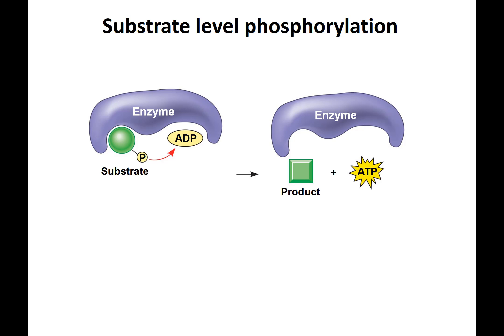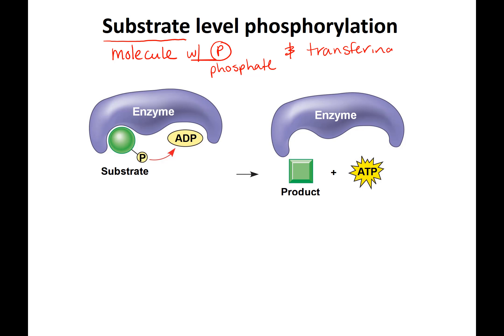Substrate-level phosphorylation means taking the phosphate from a substrate molecule and transferring it to ADP. ADP means diphosphate — two phosphates — and when we add one more we make ATP, triphosphate. That's our energy molecule.